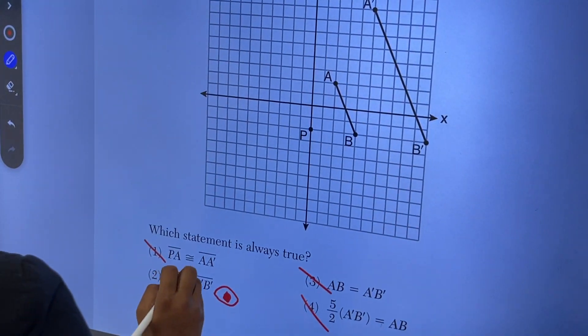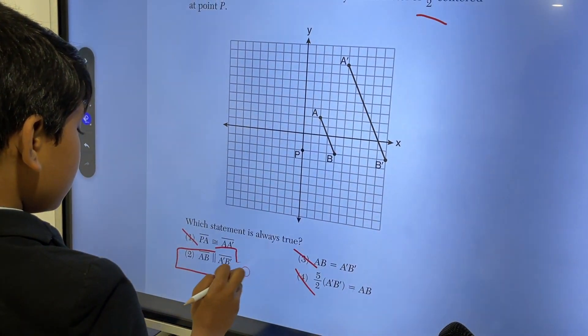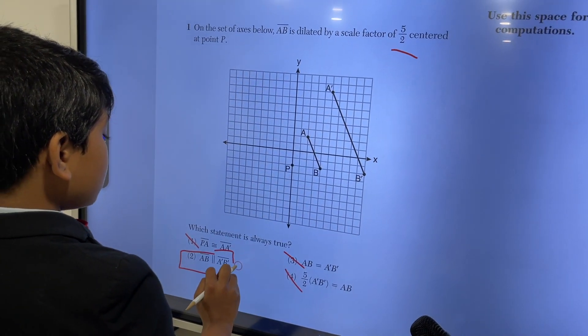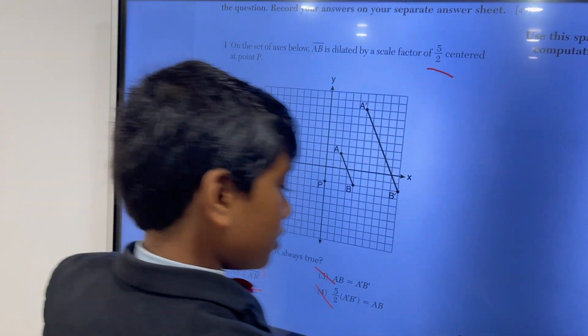This is wrong. So that means that 2 is the only correct one. So 1 is choice 2. Next.